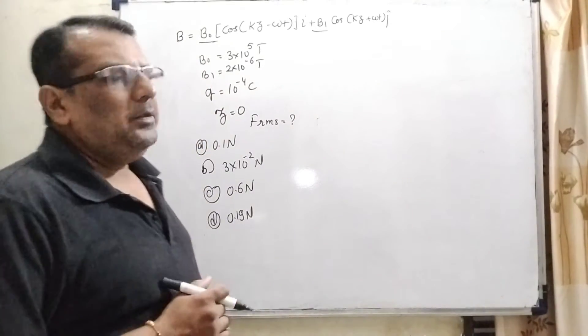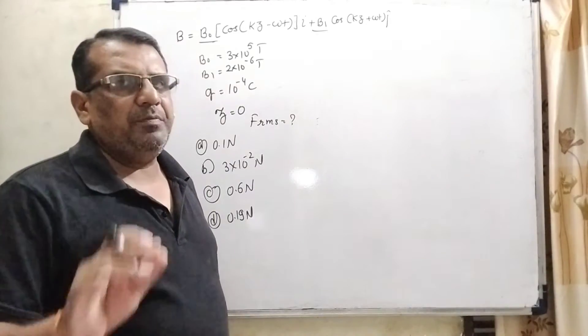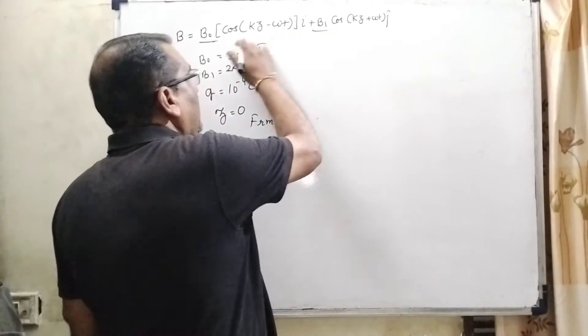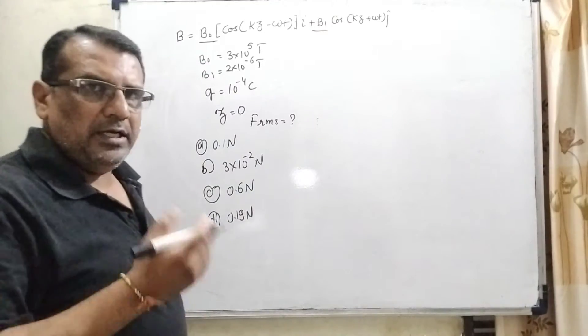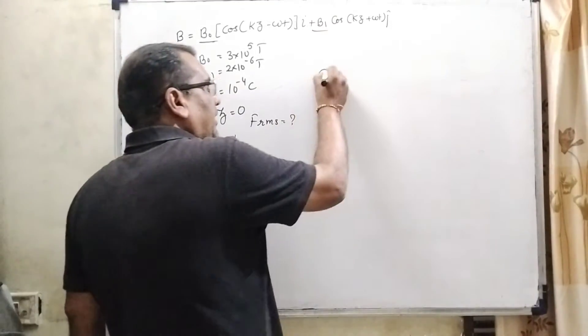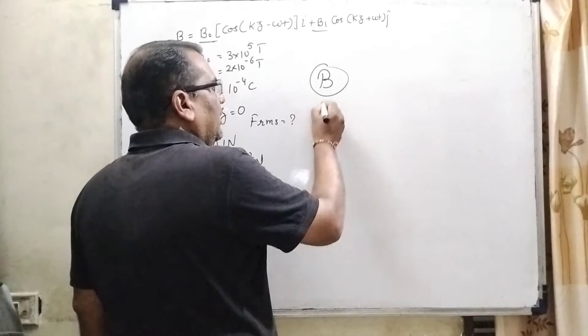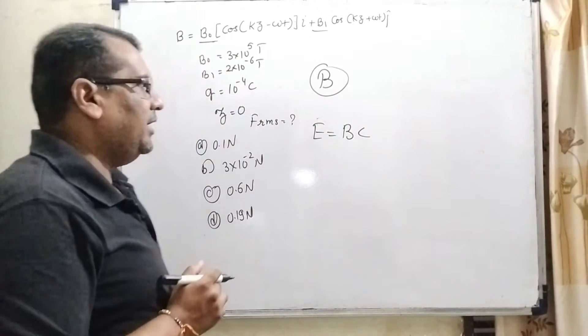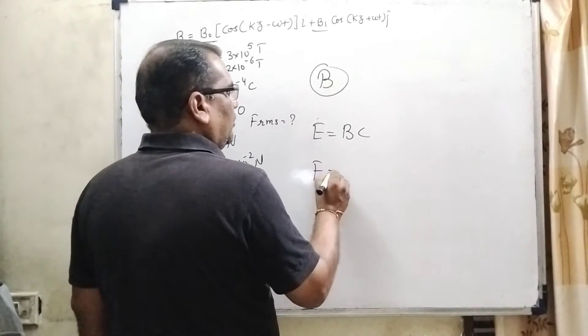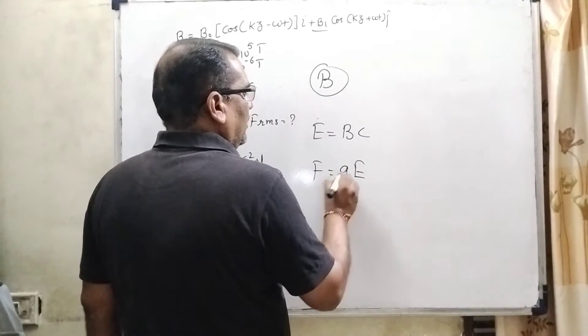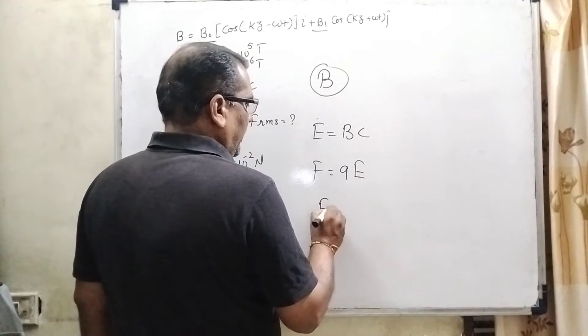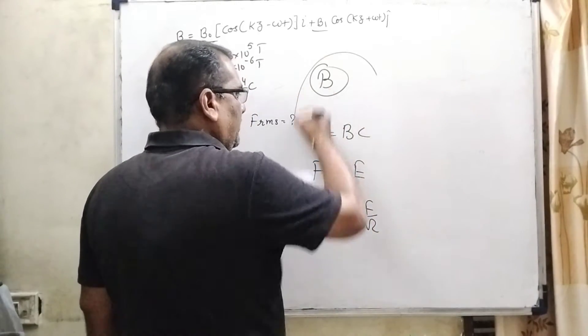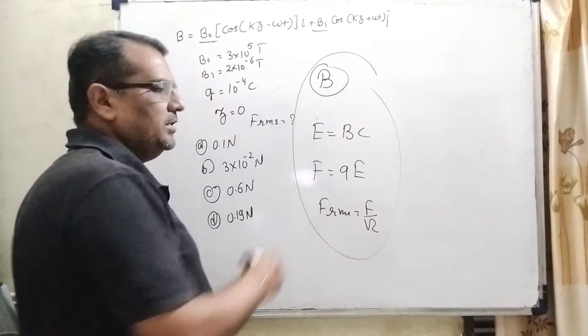Now, this is a relation-based question. I mean to say here you have given B in two components, i component and j component. Let us first find out the net magnetic field. Then we have to know that E equal to B into C, where C is the speed of light, and then F equal to Q into E. And we know that F_RMS equal to F by root 2. This is the key point and this is the working process.